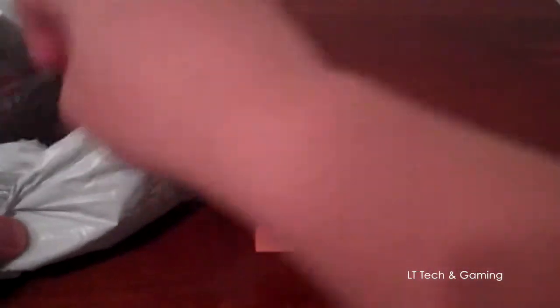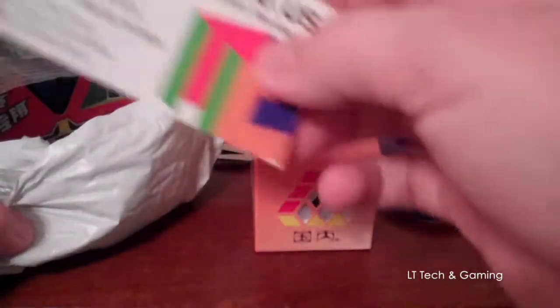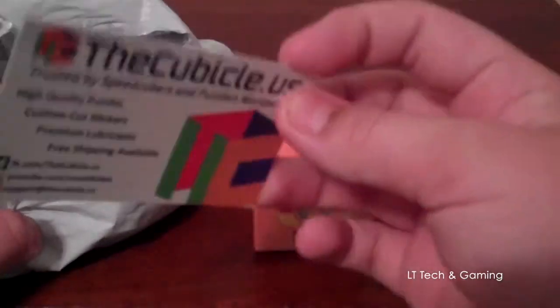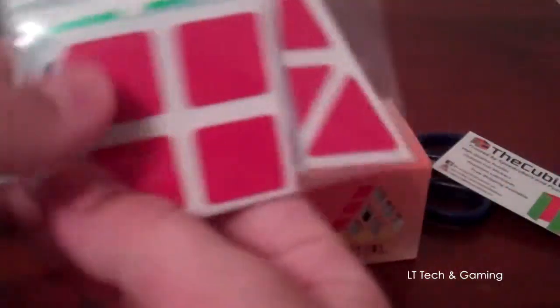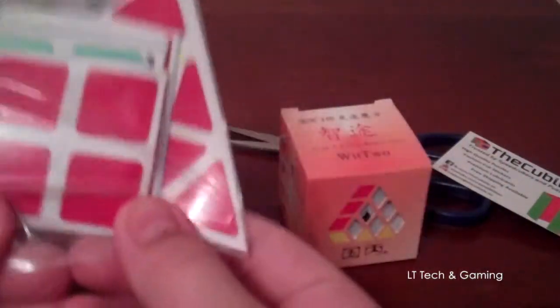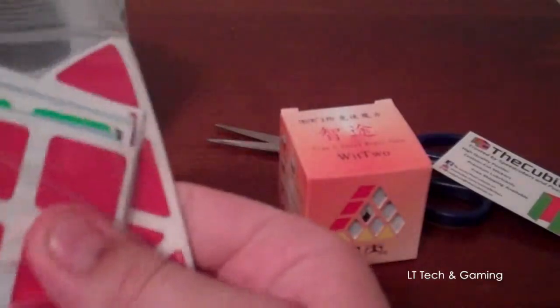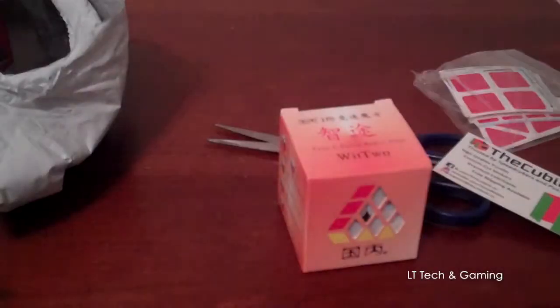So I'm just going to get everything out from here. We have a WIT 2 version 1, stickerless. The new cubicle business card. Oh, nice. I'm going to keep that. Stickers like you wouldn't believe. I got a sticker razor blade and stickers for puzzles that I have now. I got a lot of stickers. It's awesome.